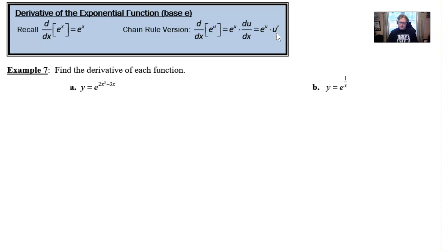So for our example seven, we're going to look at two very short examples. And we see that in part a, find the derivative of the function y equals e to the 2x squared minus 3x power. Well, if we take the derivative of y, and you can always write dy/dx, or you could write y prime...